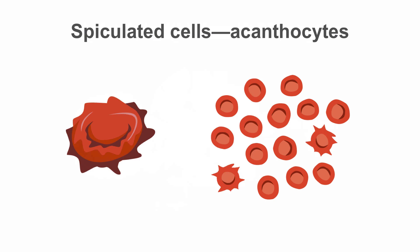Acanthocytes, also another example of spiculated cells, have 2 to 20 unequal irregular spicules. If we see few acanthocytes, we may think of hemolytic anemia, renal disease, or post-splenectomy states. If the number of acanthocytes are numerous, we should think of abetalipoproteinemia.